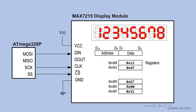How do you program register 01 with a content of 4F? Send the data 01 using SPI Transfer, and then followed by the data 4F. The register 01 will be updated with the data 4F.